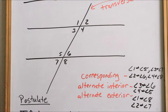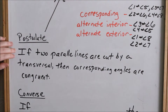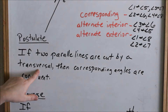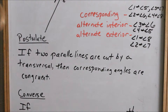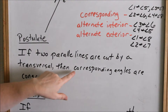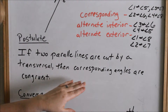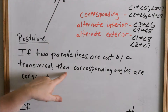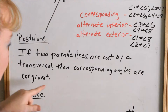With creating these angles, we can make some postulates. A postulate is just an observation. Here is one postulate: if two parallel lines are cut by a transversal, then corresponding angles are congruent. This word 'corresponding angles' could be replaced with alternate interior or alternate exterior, because if two parallel lines are cut by a transversal, then alternate interior angles are congruent, and if two parallel lines are cut by a transversal, then alternate exterior angles are congruent.